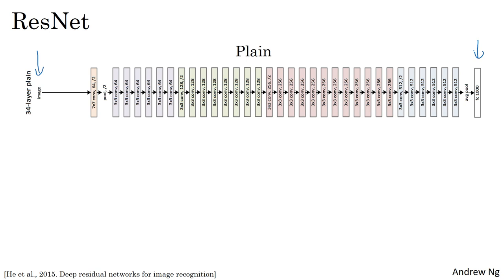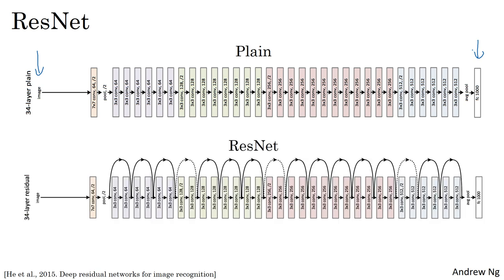To turn this into a ResNet, you add those extra skip connections. And I'll just mention a few details. There are a lot of three by three convolutions here. And most of these are three by three same convolutions.